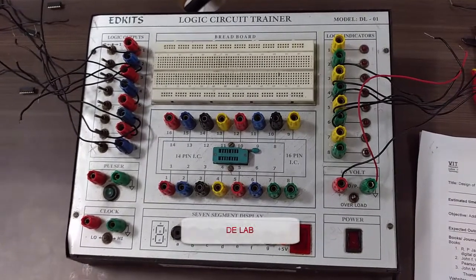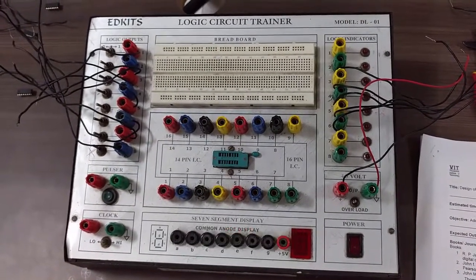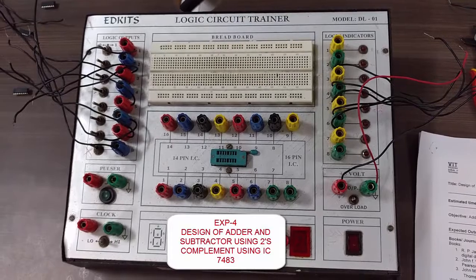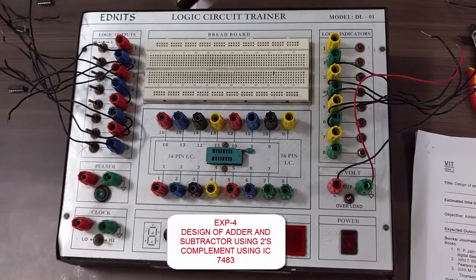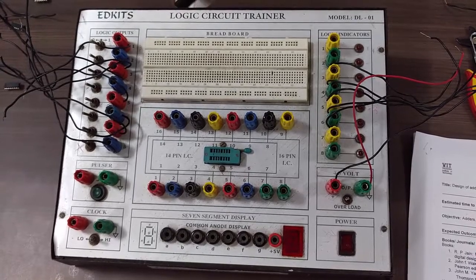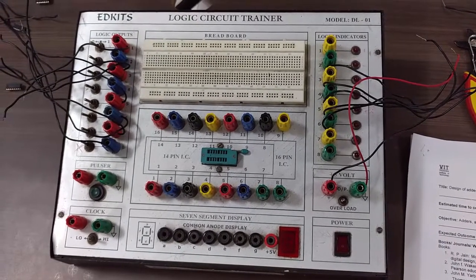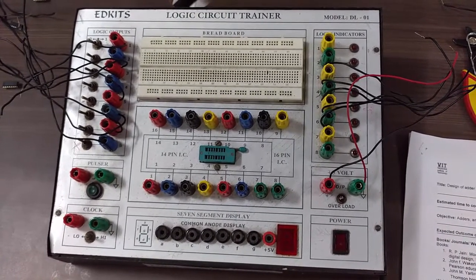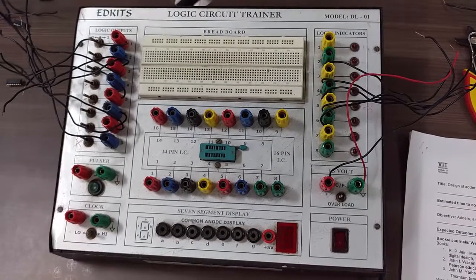Hello everyone, this is Digital Electronics Laboratory experiment number 4: design of adder and subtractor using 2's complement using IC7483. The requirements for these are logic circuit trainer, breadboard, single strand wire, IC7483, and IC7404.